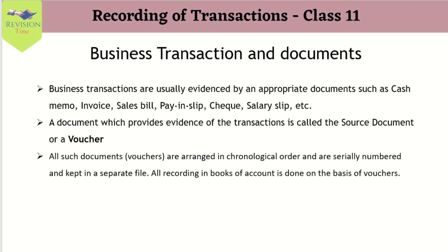We will be learning to record entries into journals and post them in ledger. Before we start with journal and ledger sums, it's very important for everyone to know and differentiate what is a business transaction and what are business documents. A business transaction is a financial transaction which involves exchange of goods or services for money — a transaction related to business involving exchange of money or money's worth that can be recorded in the books of account.